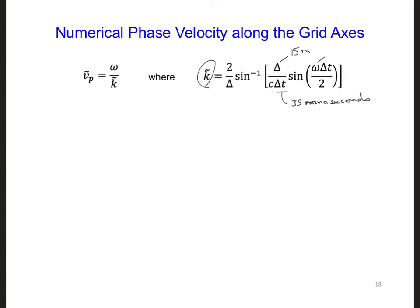And omega is 2 pi f at 1 megahertz. So what I end up with is the numerical phase velocity along the grid axes is 2.9915754e8 meters per second,